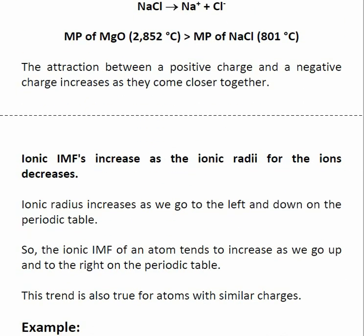Another way we can differentiate between two substances with an ionic intermolecular force is by looking at the ionic radius of the ions inside. The overall rule is that as a positive and negative charge comes closer together, they have a stronger attraction. So as the ionic radii of the ions inside my compound become smaller, that tends to increase the intermolecular force. The species with the smaller ionic radii will have the stronger intermolecular force.